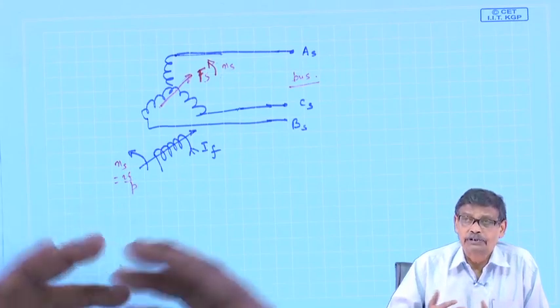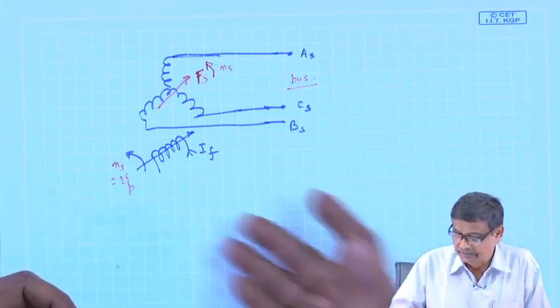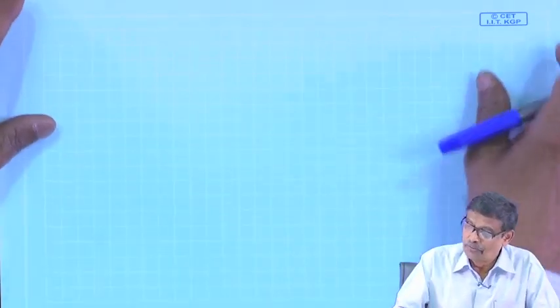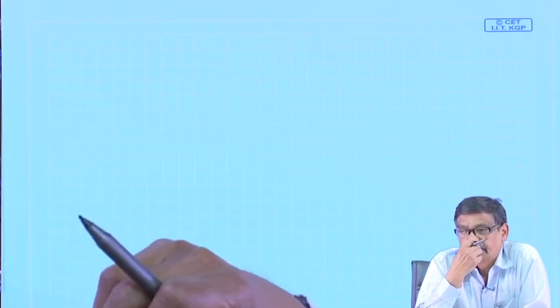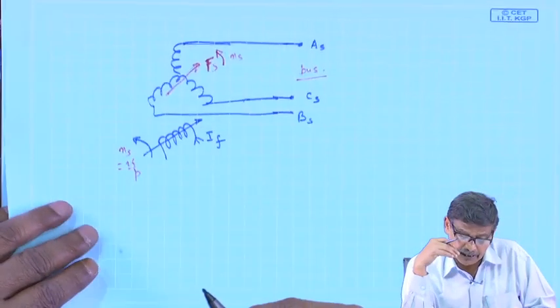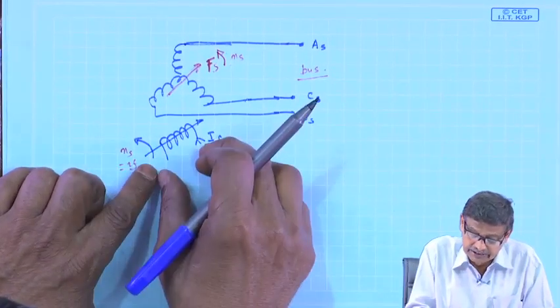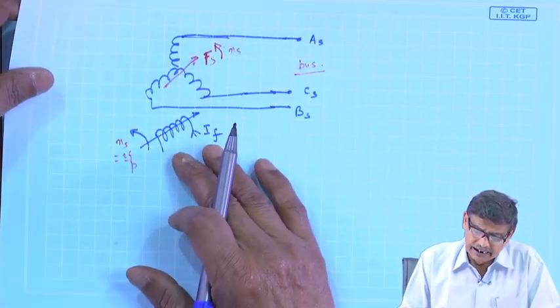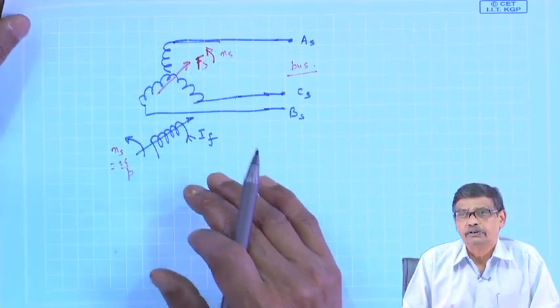Now, the question is whether it is acting as a motor or generator — these things I will tell subsequently. Before that, how do we model this synchronous machine? In the case of the induction motor, the exciting current which creates the magnetic field is drawn from the 3-phase supply itself — that is a singly excited machine. However, in a synchronous machine, the flux is established primarily by a DC current which is a separate source. So it does not put any burden on the bus.